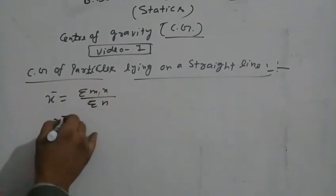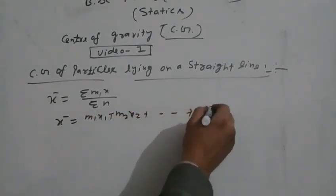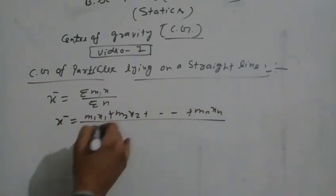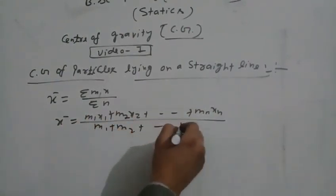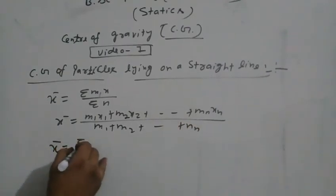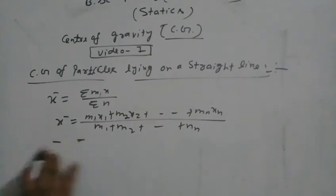That is, x bar equals M1 x1 plus M2 x2 plus dot dot dot plus MN xn upon M1 plus M2 plus dot dot dot plus MN. That is, x bar equals summation Mx upon summation M.